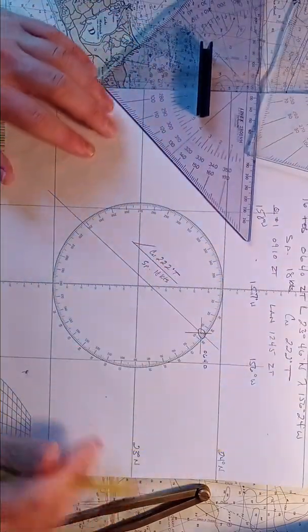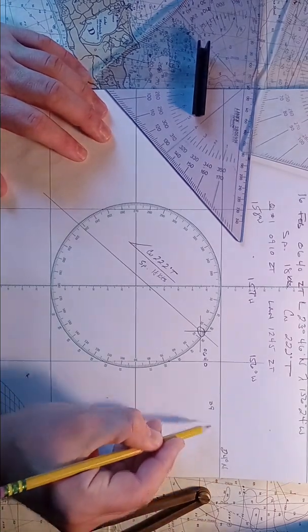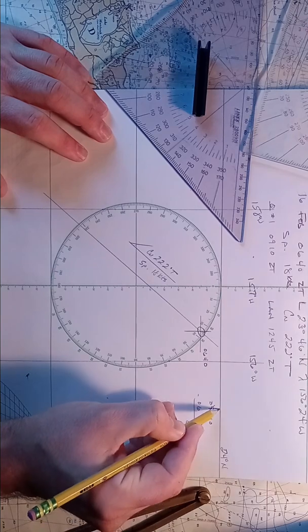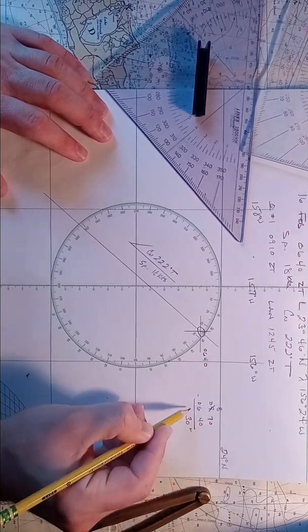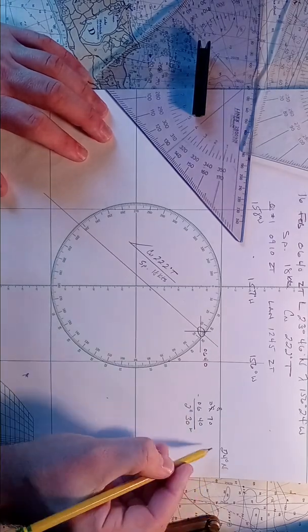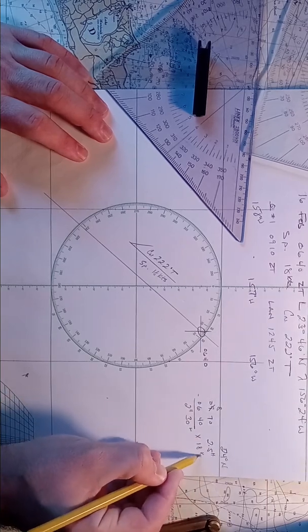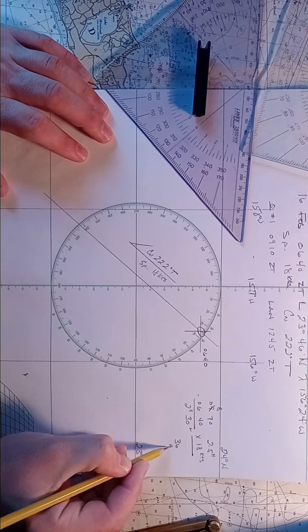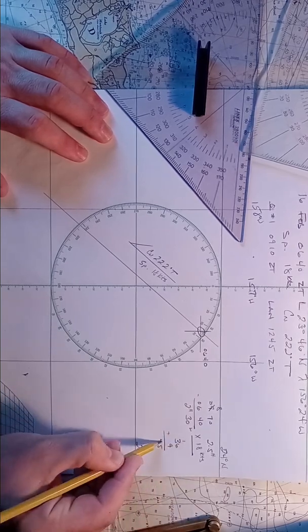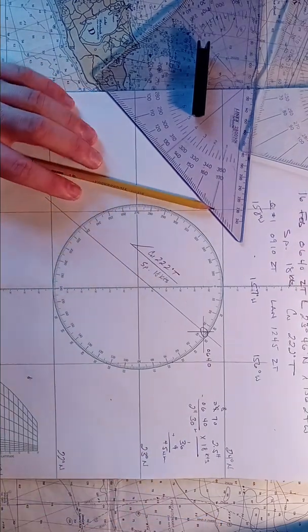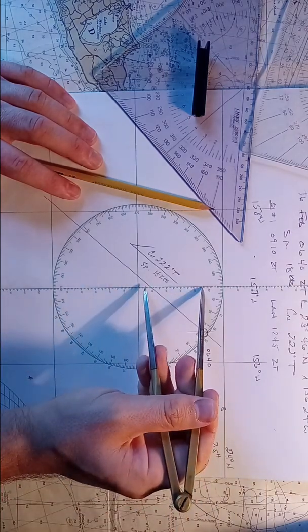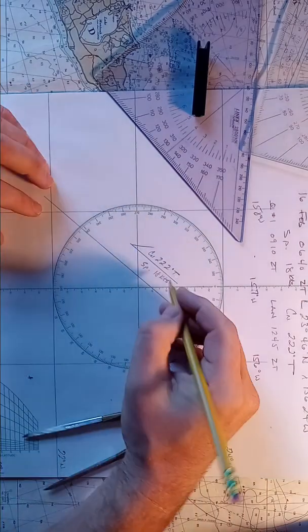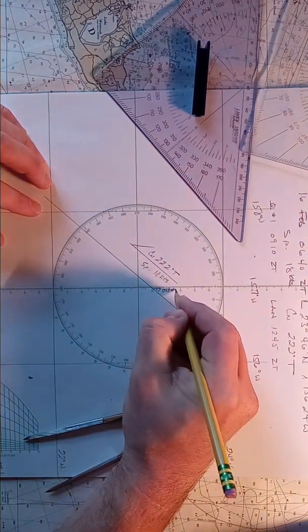Now we're going to lay out DRs for 0910 and 1245. So 0910 minus 0640. 2 hours and 35 minutes, 2 hours and 30 minutes. So we take 2.5 hours, multiply it by 18 knots. 18 times 2 is 36, half of 18 is 9, 9 and 6 is 15, carry the 1. So we've traveled 45 miles in 2 and a half hours. Mark it. Boom. So label it 0945.